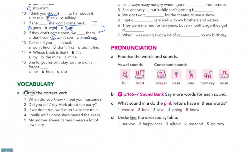Question thirteen: 'Call me if you... a taxi.' Since this topic is about the first conditional, we use present simple in the 'if' clause — 'if you don't find a taxi'. In the 'if' clause we can't use 'will', 'won't', or past simple.